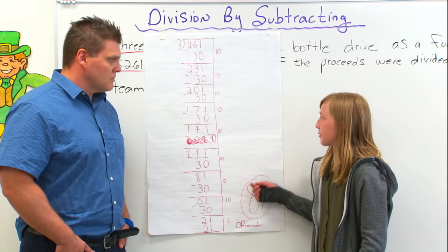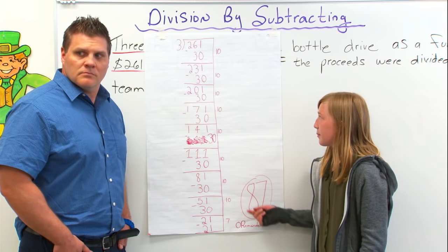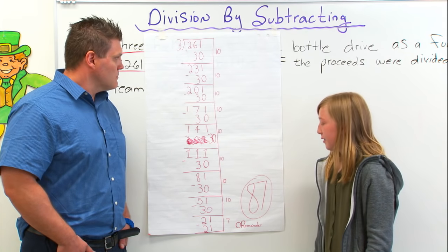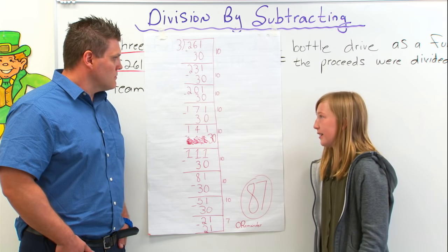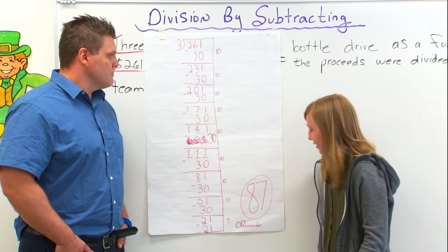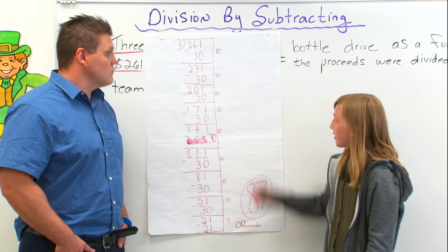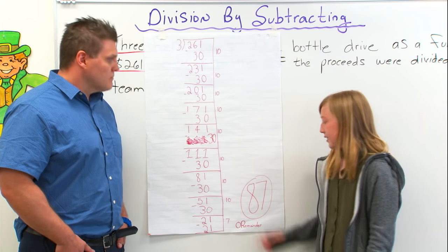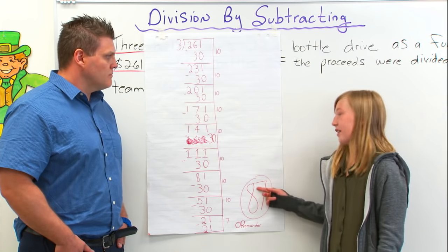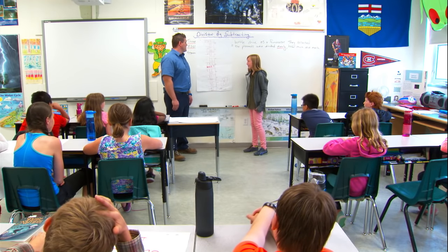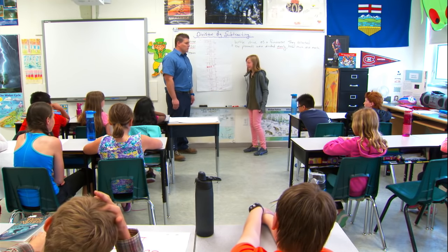So I used 7 because I knew that 3 times 7 was 21, and that's all that was left. I added all the numbers up on the side to get 87. Okay, that's fantastic, Macy. Thank you.